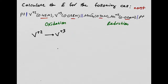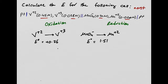For the reduction half-reaction: MnO₄⁻ going to Mn²⁺. Looking at the SRP table, that value is 1.51 V. Adding the oxidation and reduction values: 0.26 + 1.51 = 1.77 V. That would be the e-cell value at standard conditions. But we know it's not standard condition, so we have to use the Nernst equation because the concentrations are not 1 molar.